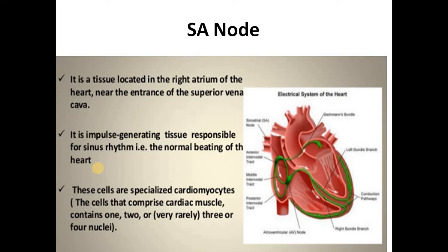When the heart beats, the atrium and ventricle go through contraction and relaxation. The contraction phase is called systole, and the relaxation phase is called diastole.